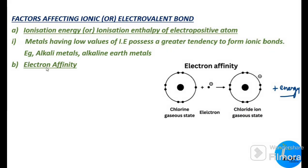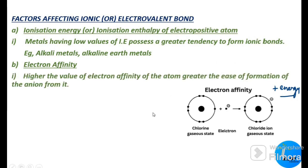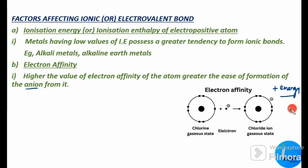How does electron affinity affect the ionic bond? Higher the value of electron affinity of an atom, greater the ease of formation of an anion from it. An anion is a negatively charged ion, formed when an electron is added to an atom. Higher the amount of energy released during the attachment of an electron to an atom, greater will be the ease of formation of an anion.